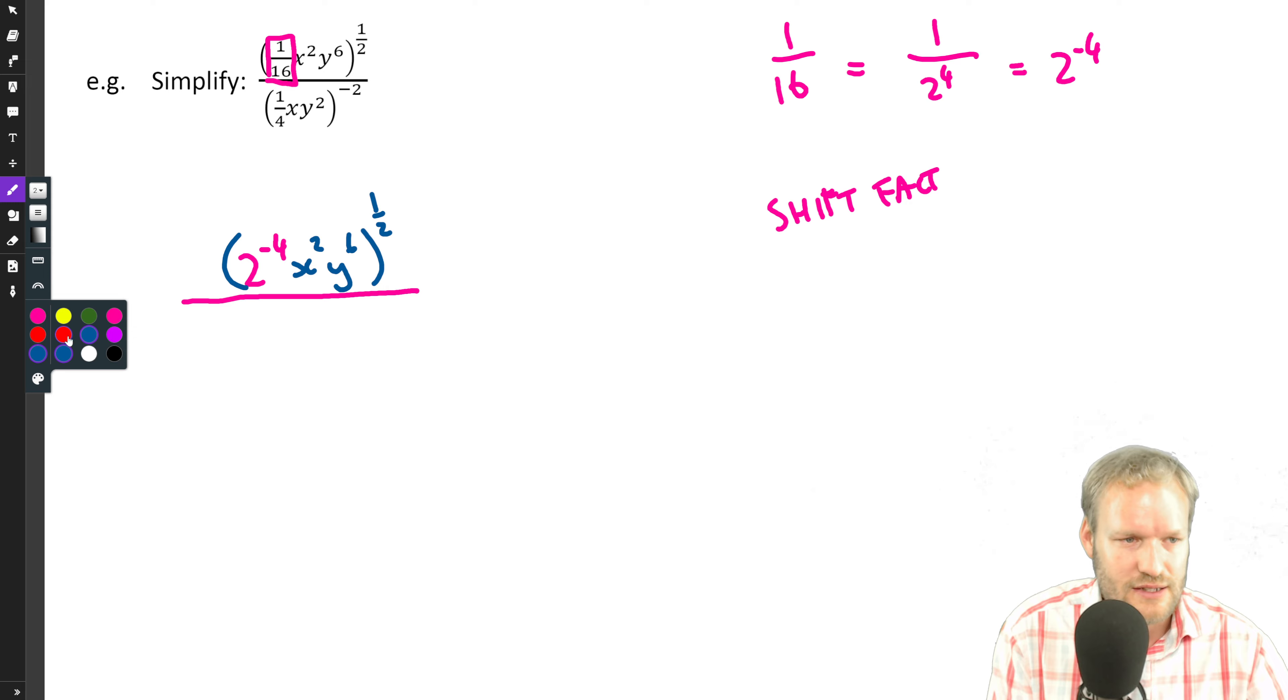Now let's do the same thing with the denominator and say, well, let's look at this one over four. One over four, that's one over two squared. That's the same as two to the negative two because we know exponent laws with negative exponents.